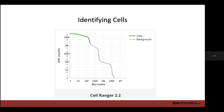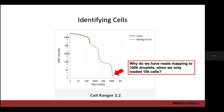Once we've quantified our reads, we need to identify our cells. Looking at a barcode rank plot — cell barcodes ordered from most to least UMIs on the x-axis, and total UMI counts on the y-axis — we can see UMIs for over 100,000 different cell barcodes, even though we only loaded enough to capture 10,000 cells.